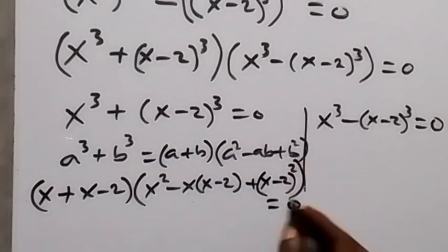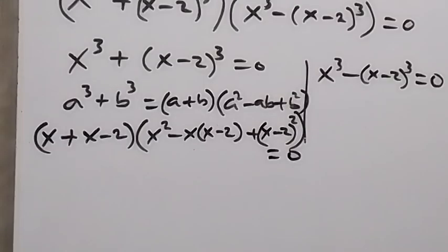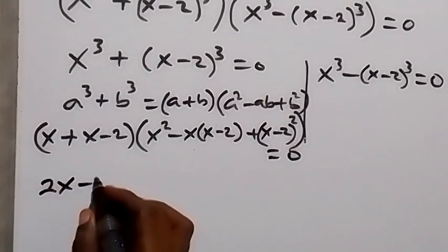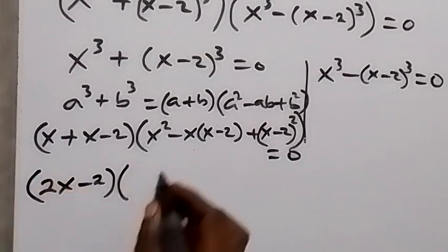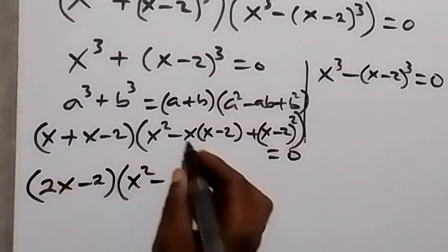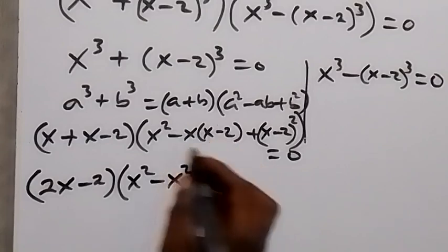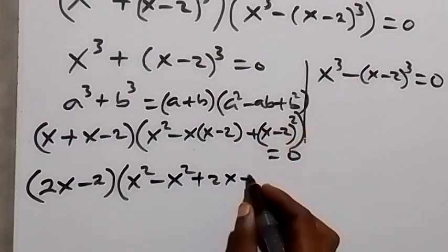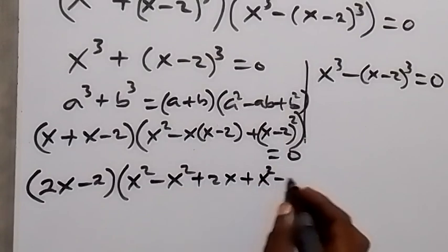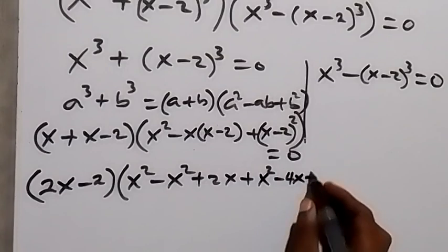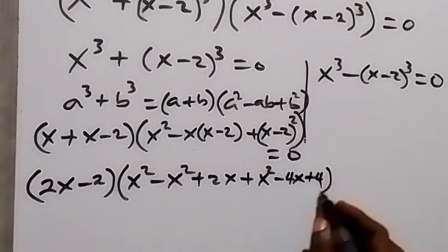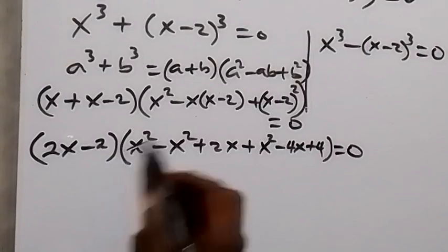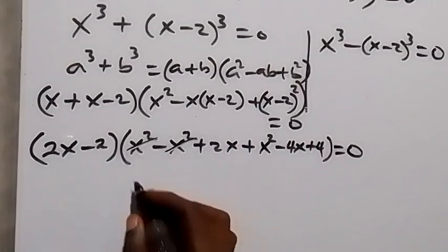When we expand this, we have x plus x which is 2x minus 2, then in the bracket we have x squared, and expanding minus x times x minus 2 gives minus x squared plus 2x, and expanding x minus 2 squared gives plus x squared minus 4x plus 4, which equals to 0. Inside the bracket, x squared minus x squared cancel out.